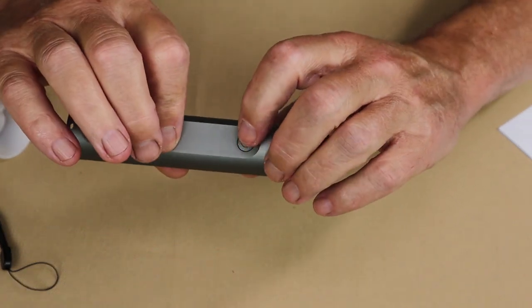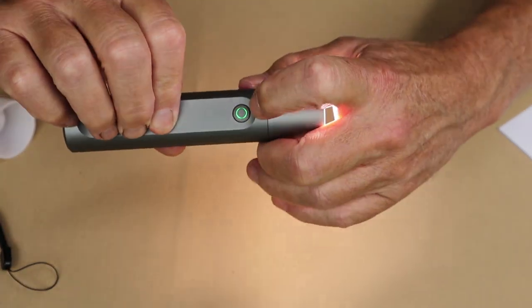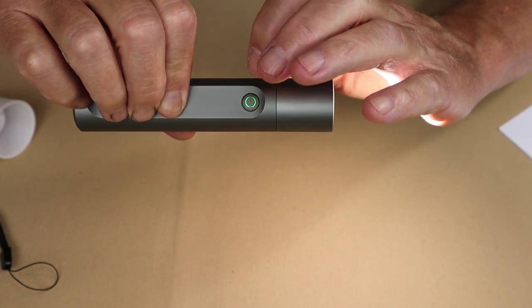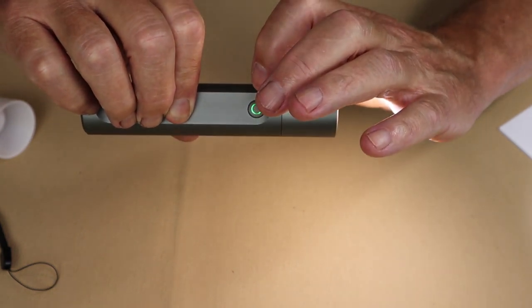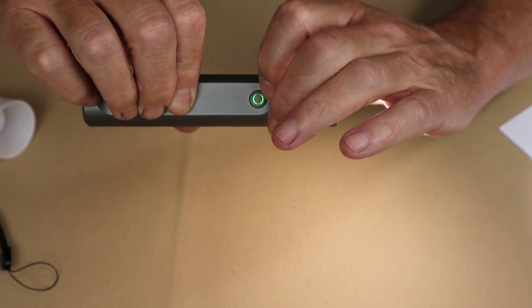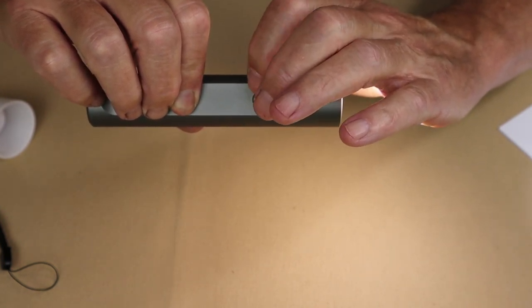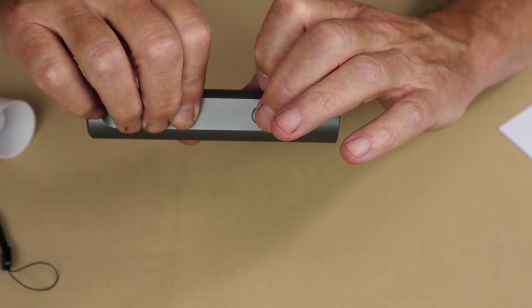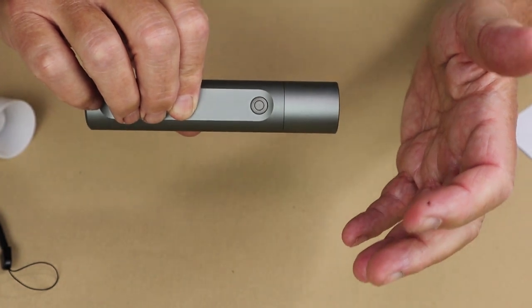I point this out while I have it right here in my hands. If I turn the light on, you'll see that it has a green LED inside of the on-off button, which is great. It tells me I have sufficient charge. Should the charge run down to the point the light needs to be recharged, it will show red. It'll also show red while it is charging until it is fully charged, and then again it'll show green.